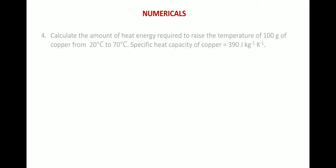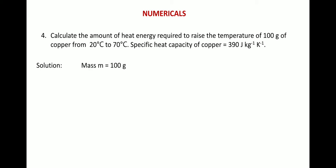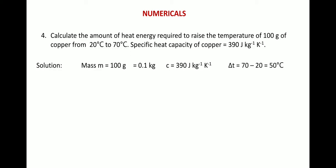Question 4: Calculate the amount of heat energy required to raise the temperature of 100 grams of copper from 20 degrees Celsius to 70 degrees Celsius. Specific heat capacity of copper is 390 joules per kg per Kelvin. From the question: mass M = 100 grams = 0.1 kg; C = 390 J/kg/K; temperature rises from 20°C to 70°C, so ΔT = 70 − 20 = 50 degrees Celsius.